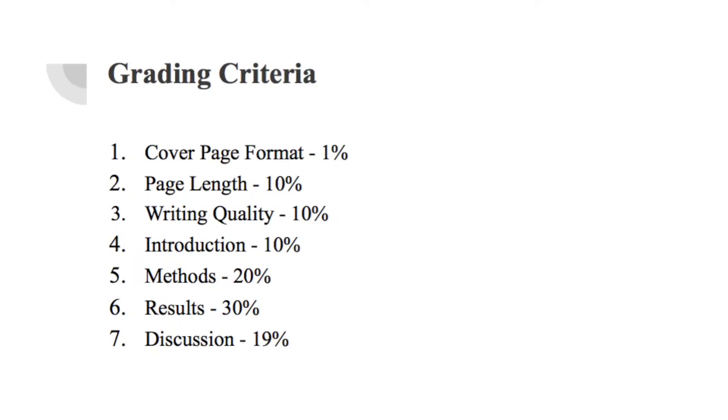First, let's look at the grading breakdown of a lab report for BME 209 or 219. You'll be evaluated on seven overarching criteria categories. These categories are cover page format, page length, introduction, methods, results, discussion, and your overall writing quality.